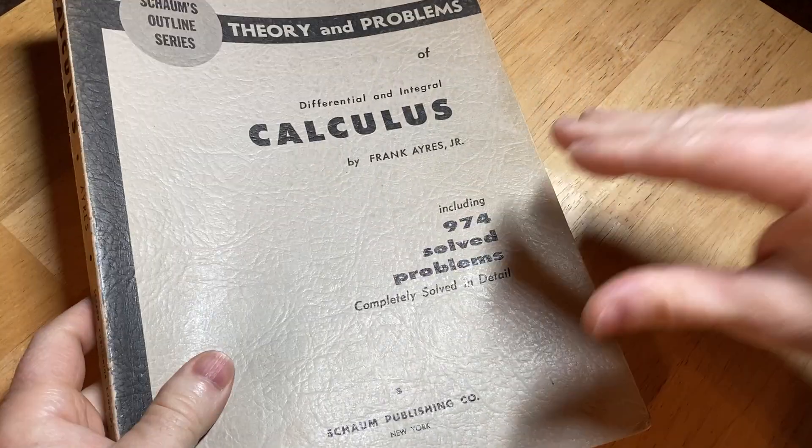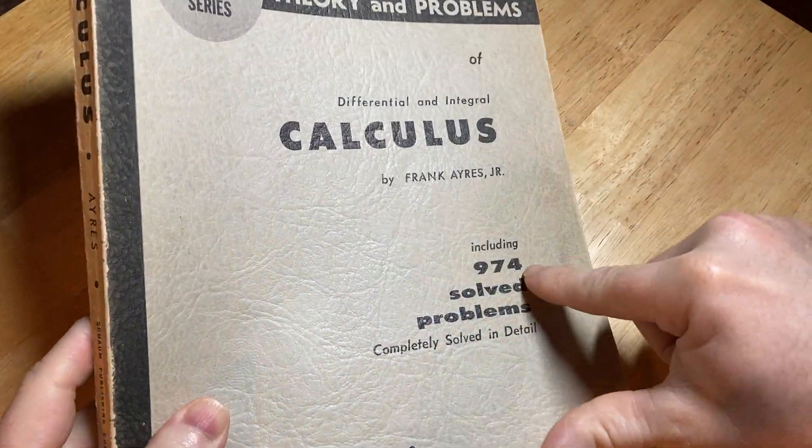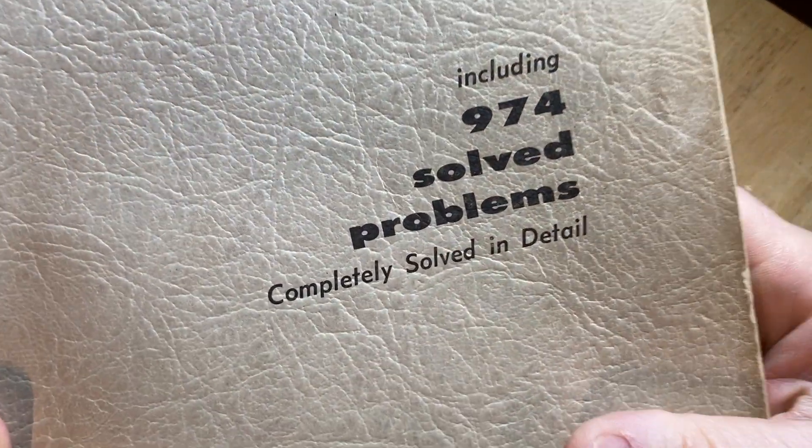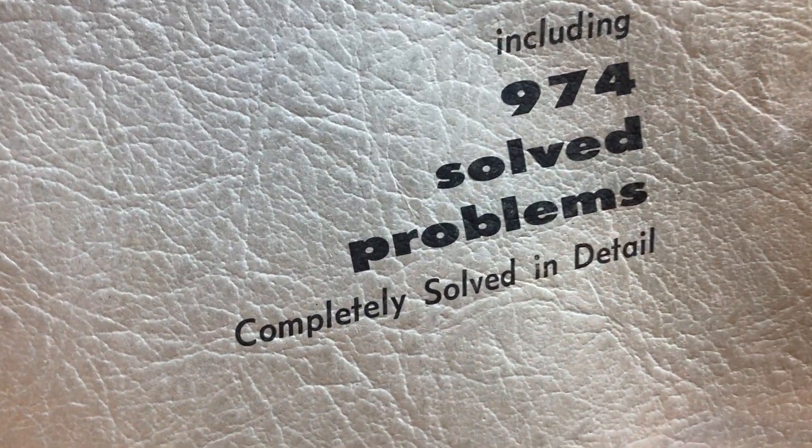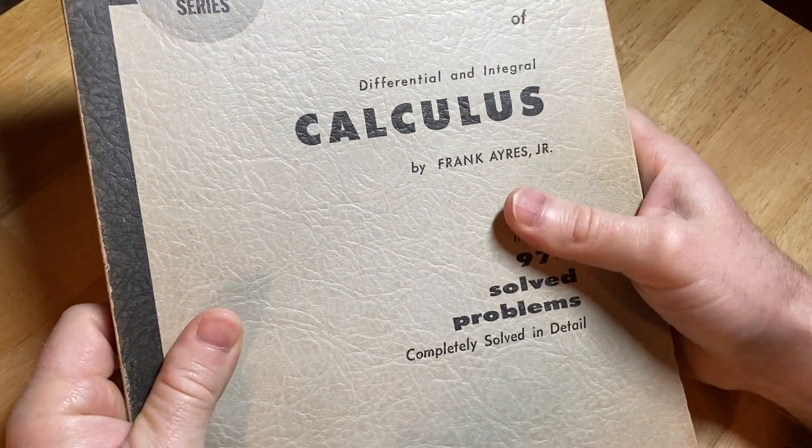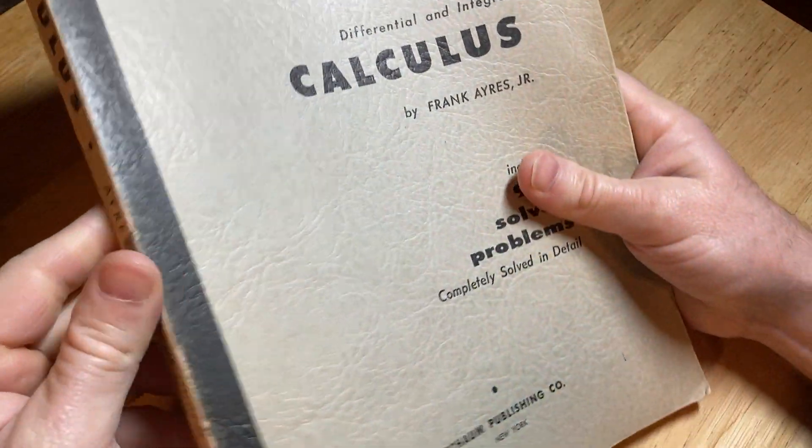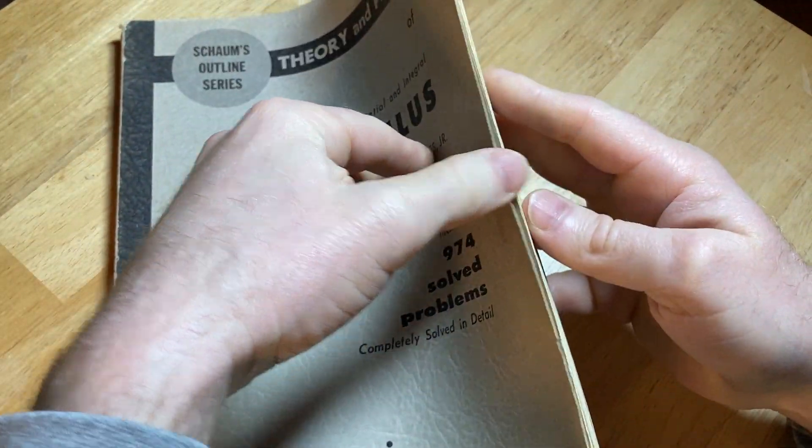I could be just going off memory, but I'm pretty sure that the newer editions of this book have more solved problems. This says including 974 solved problems, completely solved in detail. This is the Schaum's Outline Theory and Problems of Calculus. It's Differential and Integral Calculus by Frank Ayres Jr.